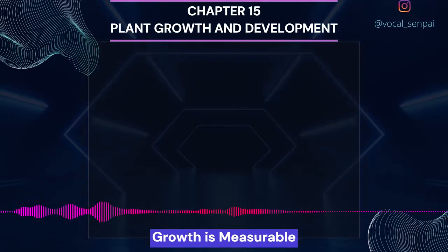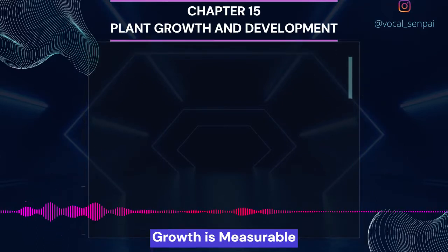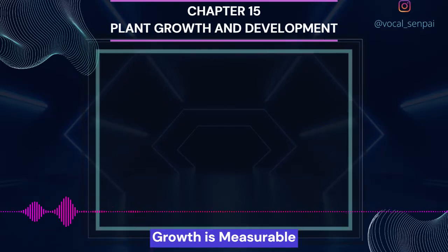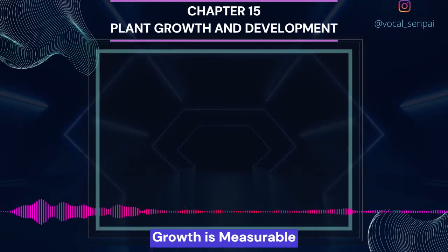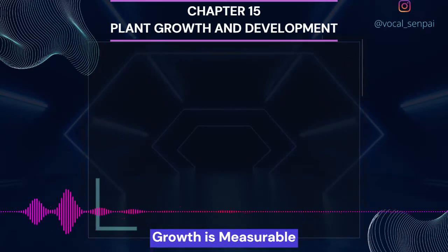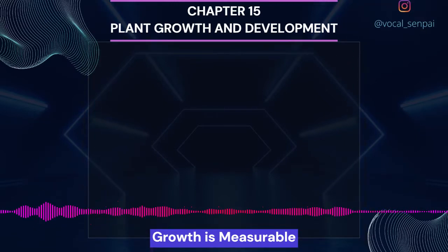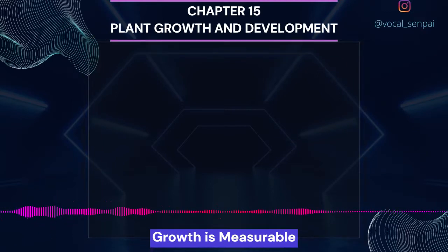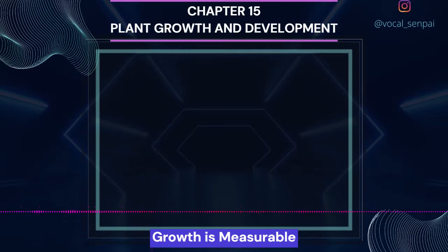Growth is measurable. Growth, at a cellular level, is principally a consequence of increase in the amount of protoplasm. Since increase in protoplasm is difficult to measure directly, one generally measures some quantity which is more or less proportional to it. Growth is therefore measured by a variety of parameters, some of which are increase in fresh weight, dry weight, length, area, volume and cell number. One single maize root apical meristem can give rise to more than 17,500 new cells per hour, whereas cells in a watermelon may increase in size by up to 3,50,000 times. In the former, growth is expressed as increase in cell number; the latter expresses growth as increase in size of the cell. While the growth of a pollen tube is measured in terms of its length, an increase in surface area denotes the growth in a dorsiventral leaf.